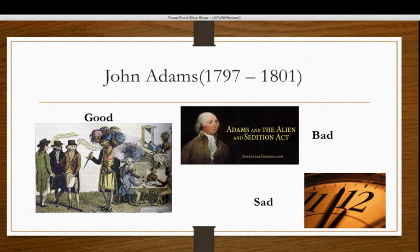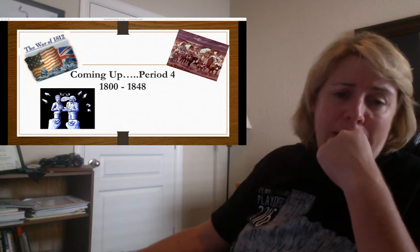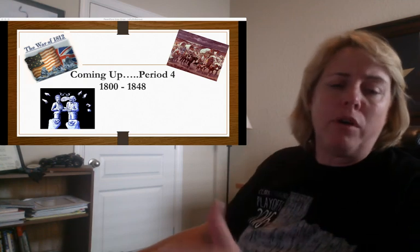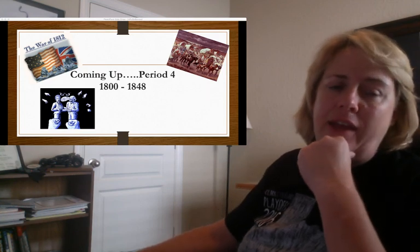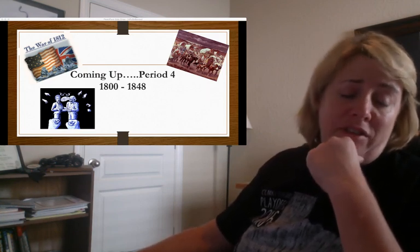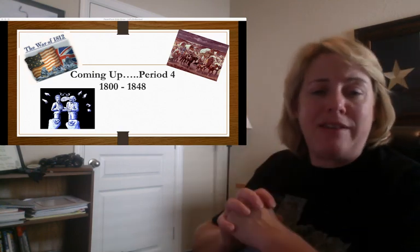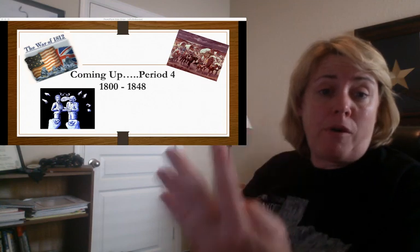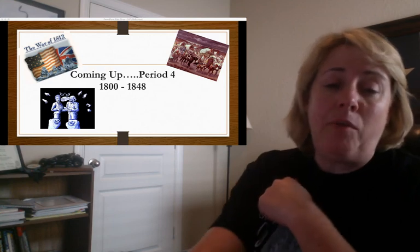That's Period 3. There's obviously a lot more in there — I didn't talk much about the Bill of Rights, which was a compromise made to get the Anti-Federalists on board with the Constitution. They agreed to support it as written as long as a Bill of Rights was added, which Madison drafted right away. The Bill of Rights took effect in 1791. But these are just the big ideas you need to know. Coming up: Period 4 — we'll get that up as soon as we can. Hope you're having a great weekend, happy studying, and we'll see you soon.